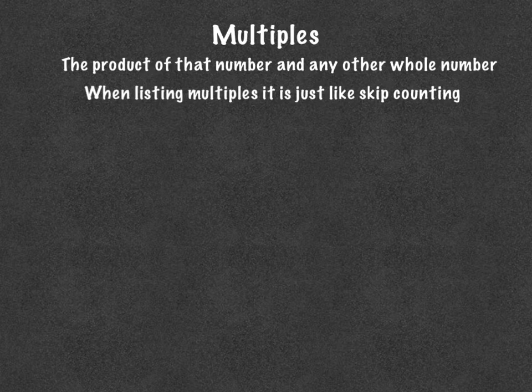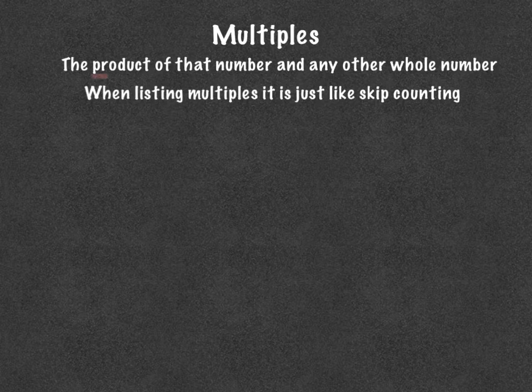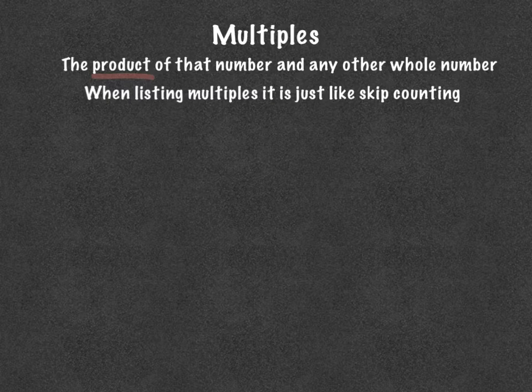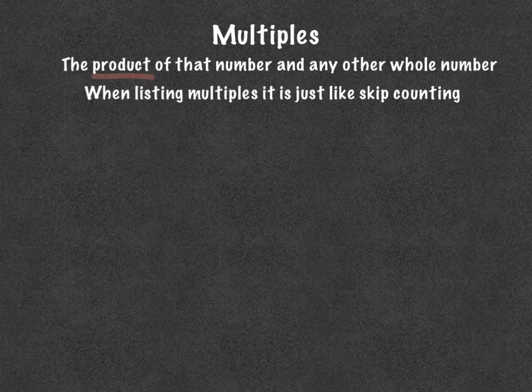So product is going to mean to multiply, right? So that's our math word in here. The product of that number and any other whole number. So when you're talking about the multiple of a number, it's that number. So if we're talking about the multiples of two, we'd have two times whatever that other whole number would be.